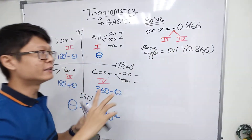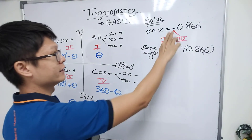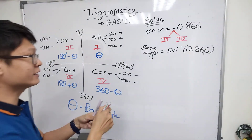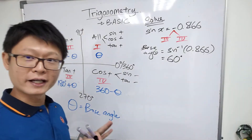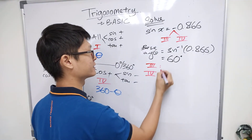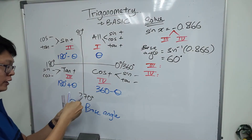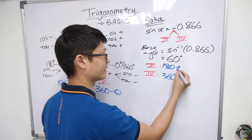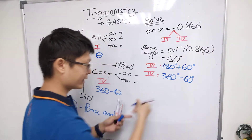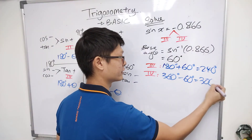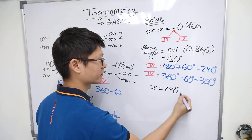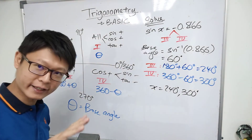Important: do not put the negative inside the base angle. The negative is only to identify the quadrant, not to find the base angle. So just put the positive value inside. Using the calculator you get 60 degrees as the base angle. Now apply the formulas for quadrant three and four: 180 plus 60 equals 240, and 360 minus 60 equals 300. So x equals 240 and 300 — two answers. That's the basic for trigonometry.